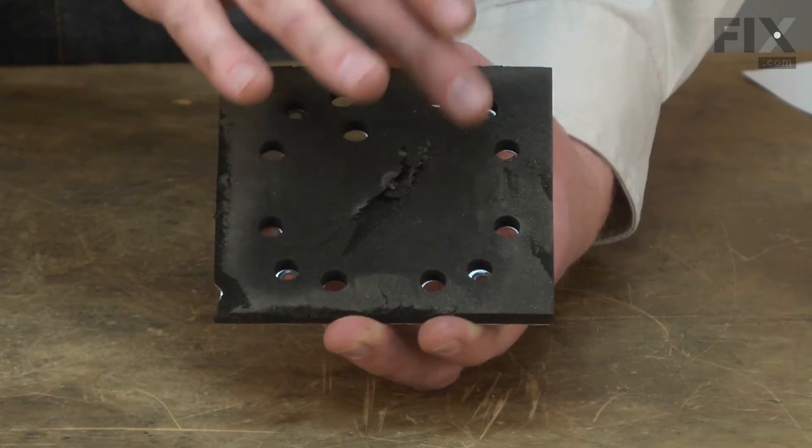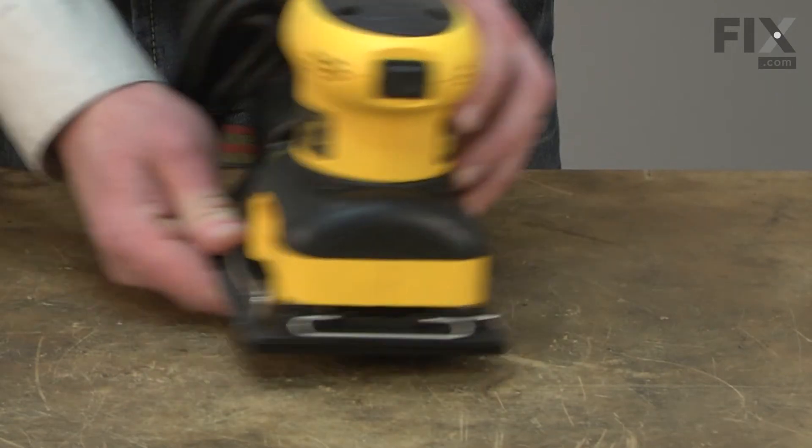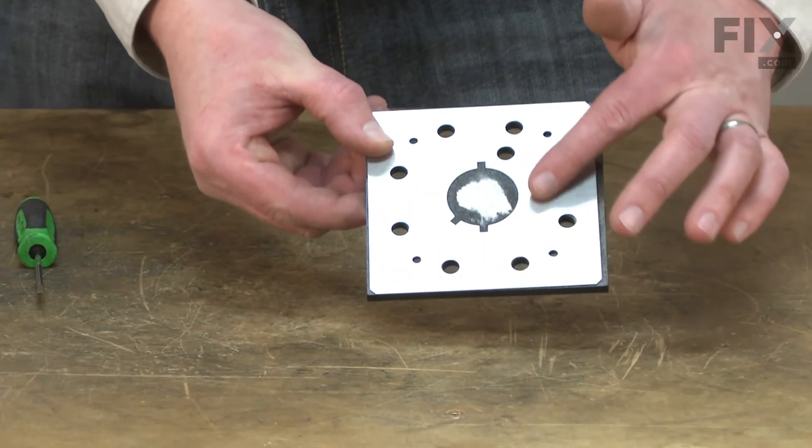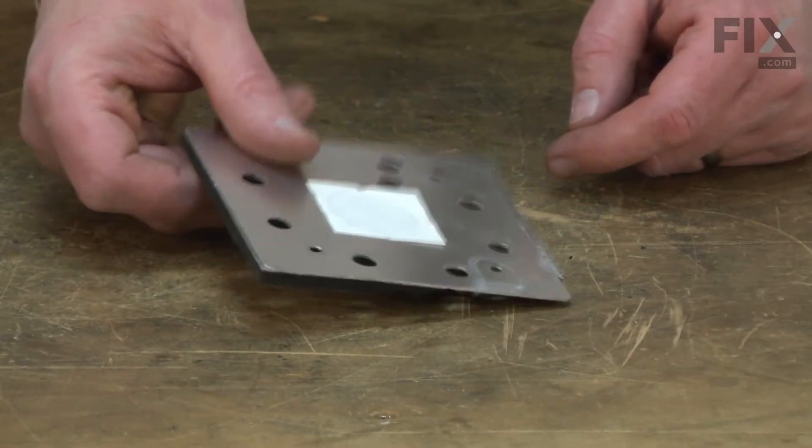This can create areas of the pad that will sand more aggressively than others, leading to uneven sanding patterns, especially on softer woods. If the pad wears down to the point that the metal plate is in contact with the paper, the sander will tend to bounce and move around erratically.